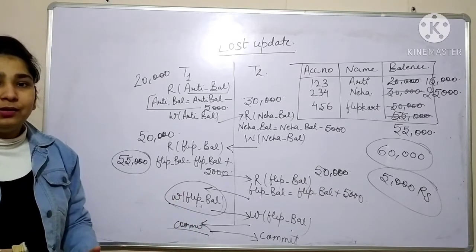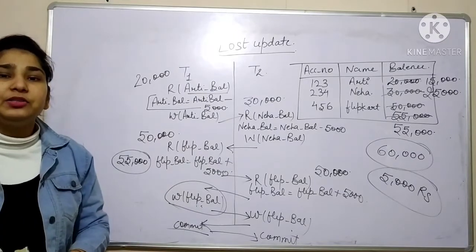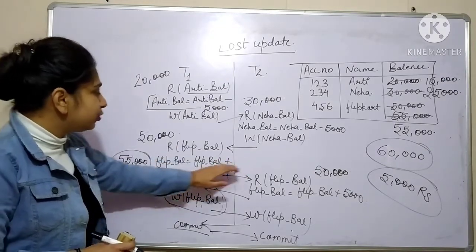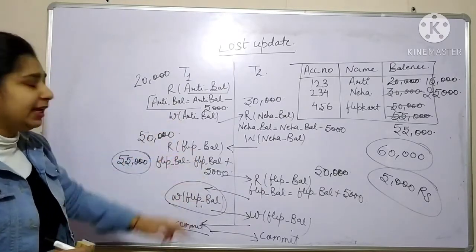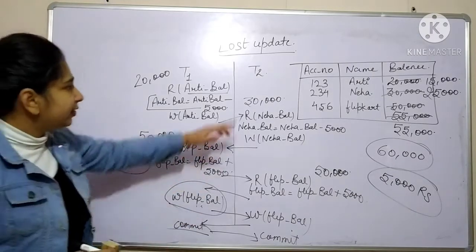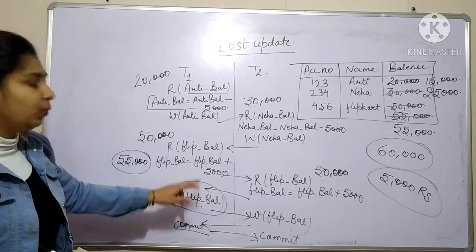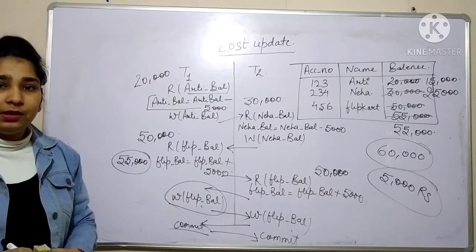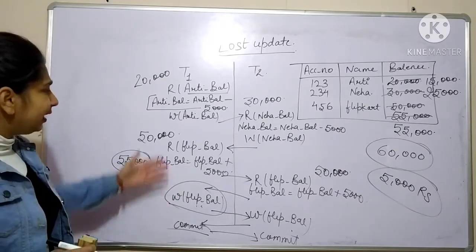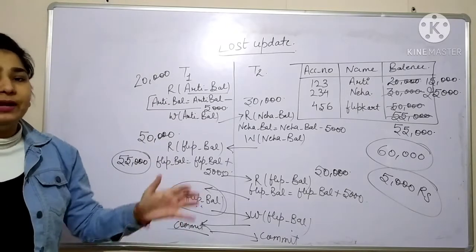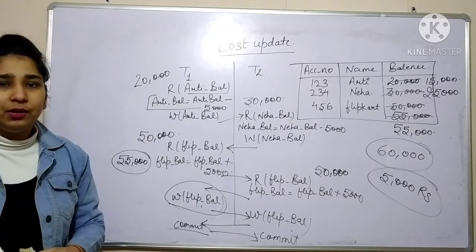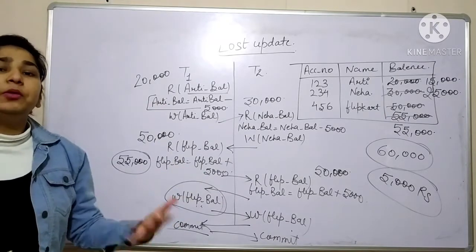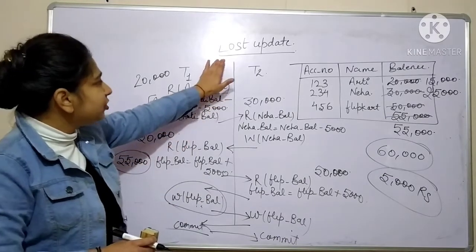They both want to modify the Flipkart balance, but since they read the same value, whatever changes T1 made are lost. Whatever transaction executes last, that change is what you see in the database. The right approach is: T1 should first commit its modification, and then T2 should read the updated, committed value. That way we can avoid this kind of problem.